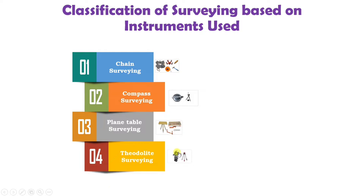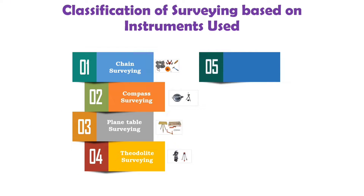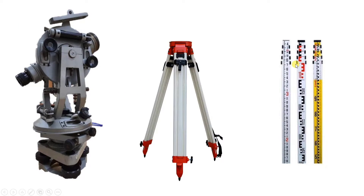The next is theodolite survey. A theodolite is a very versatile instrument used for the measurement of horizontal and vertical angles very accurately. The next is tachymetric survey. In tachymetric survey, a special kind of theodolite called a tachymeter is used to determine horizontal and vertical distances indirectly.